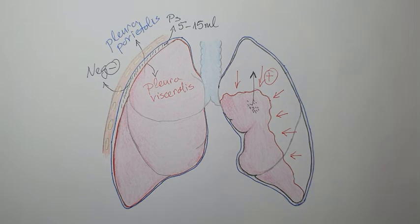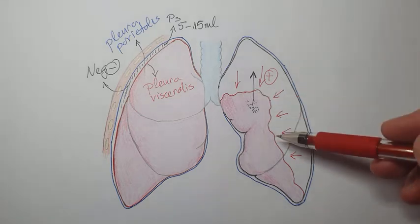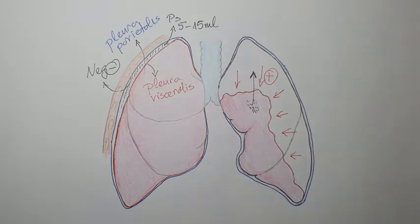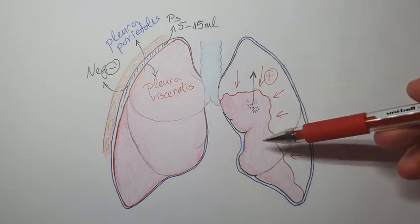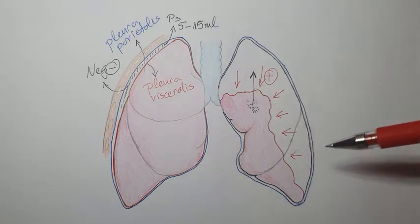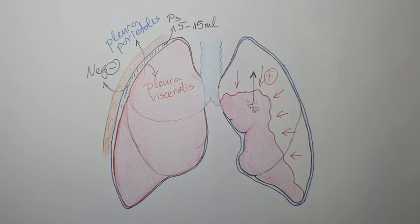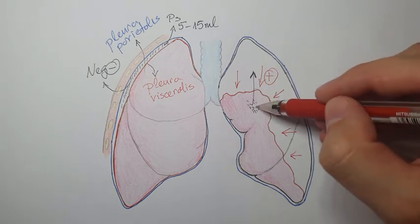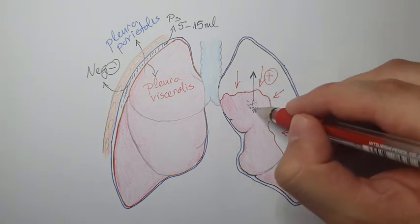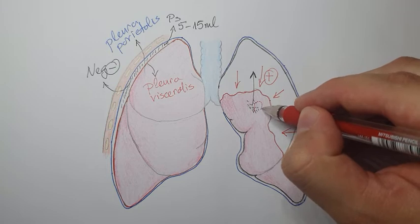Pneumothorax can be classified as spontaneous, when it happens in healthy lung tissue, secondary, when it results from an underlying lung disease or trauma, and tension pneumothorax, which is the most dangerous type.